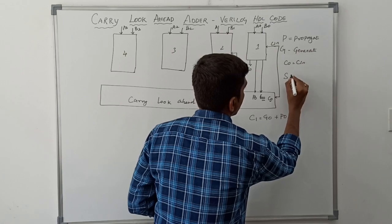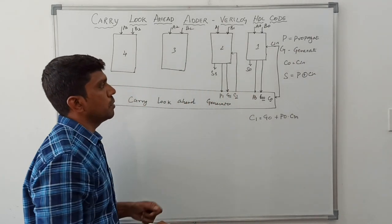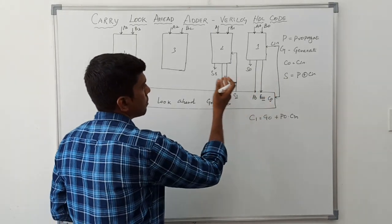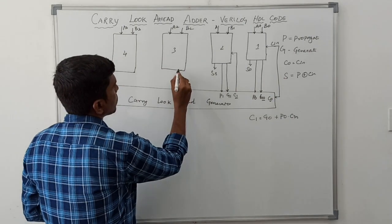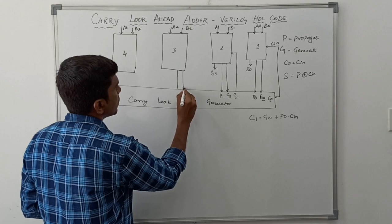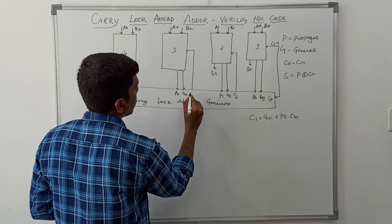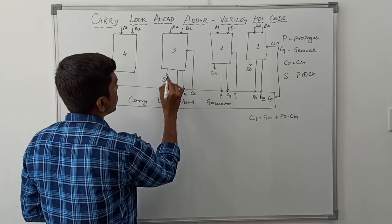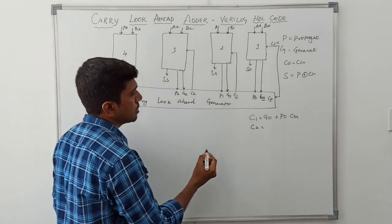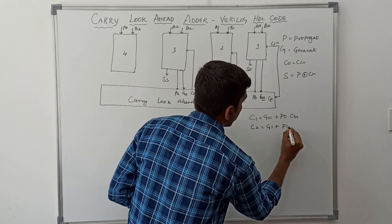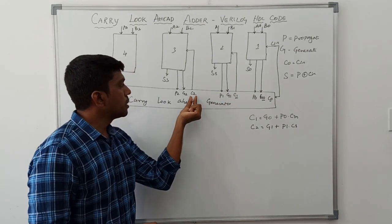The sum formula is P XOR C, which is a general sum expression. Using this sum equation we can find S0, S1, S2, and S3. For the third full adder, A2 and B2 produce P2 and G2. The corresponding carry value is C2. The C2 expression is: C2 = G1 + P1 · C1, based on the previous carry value.